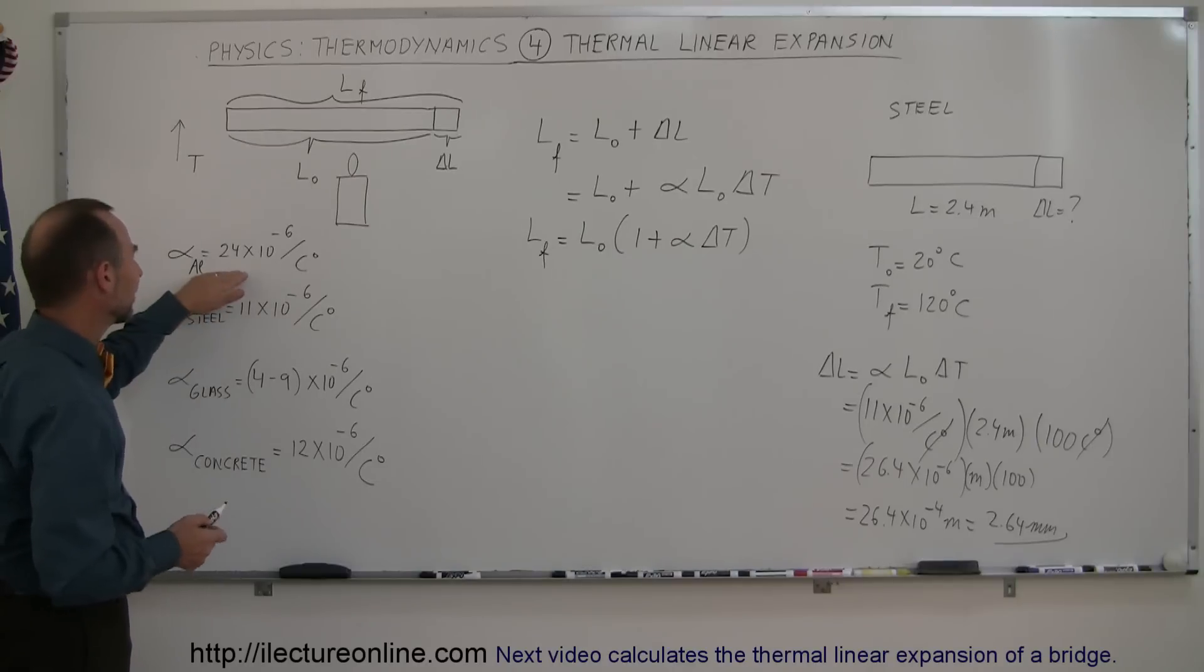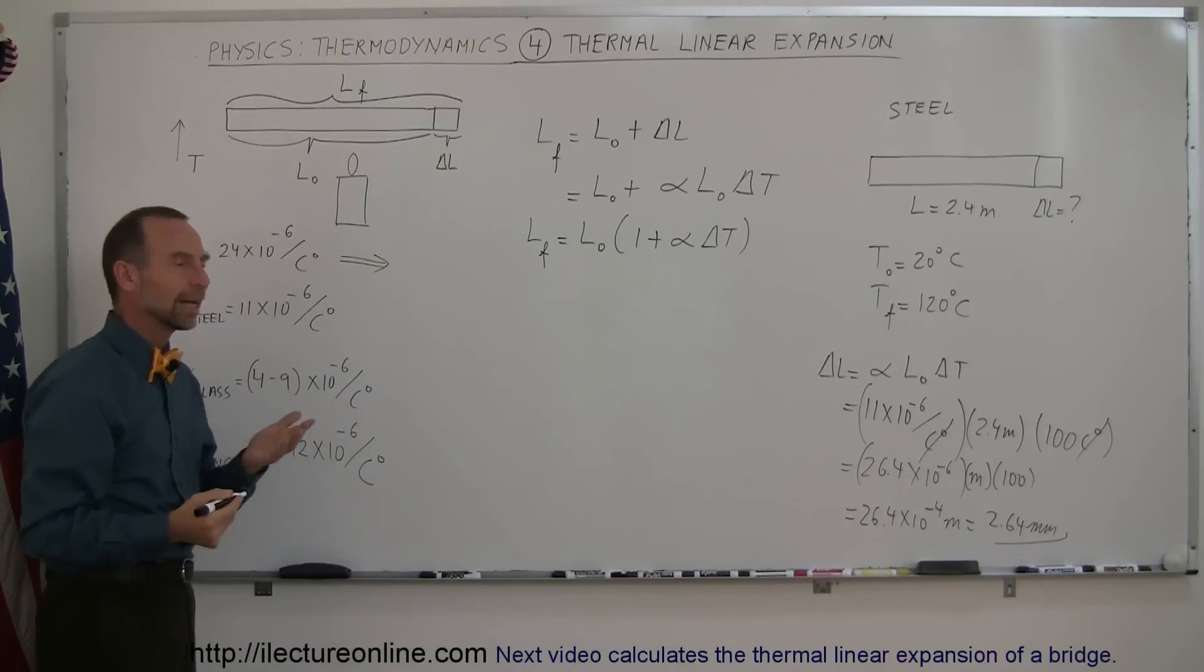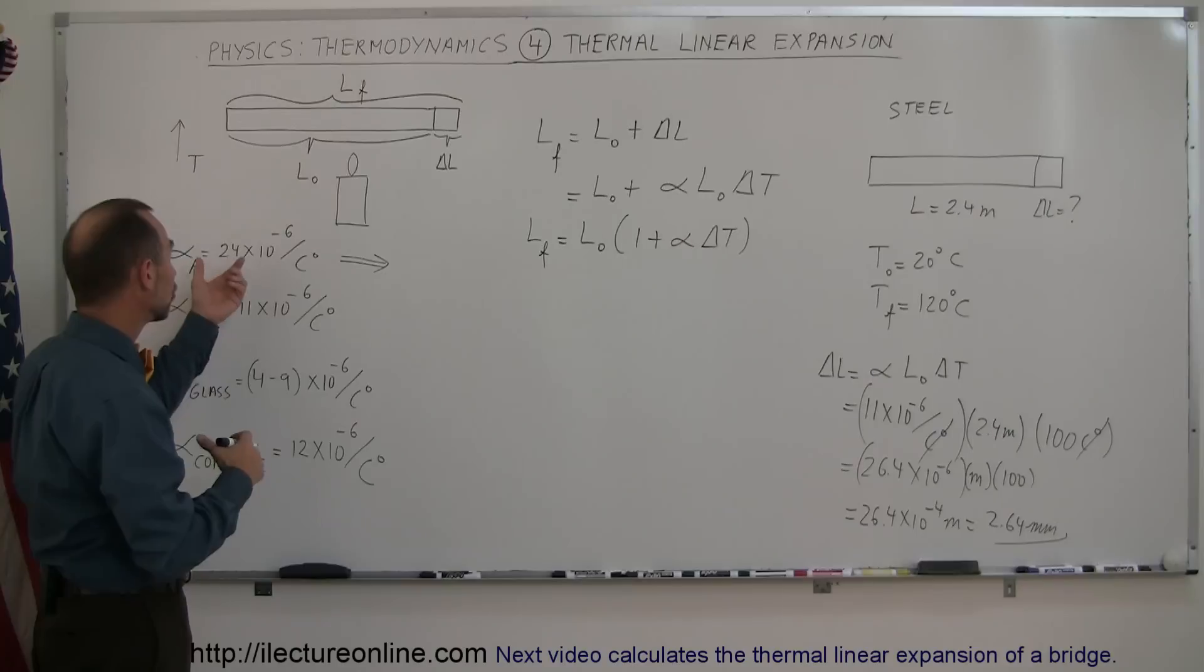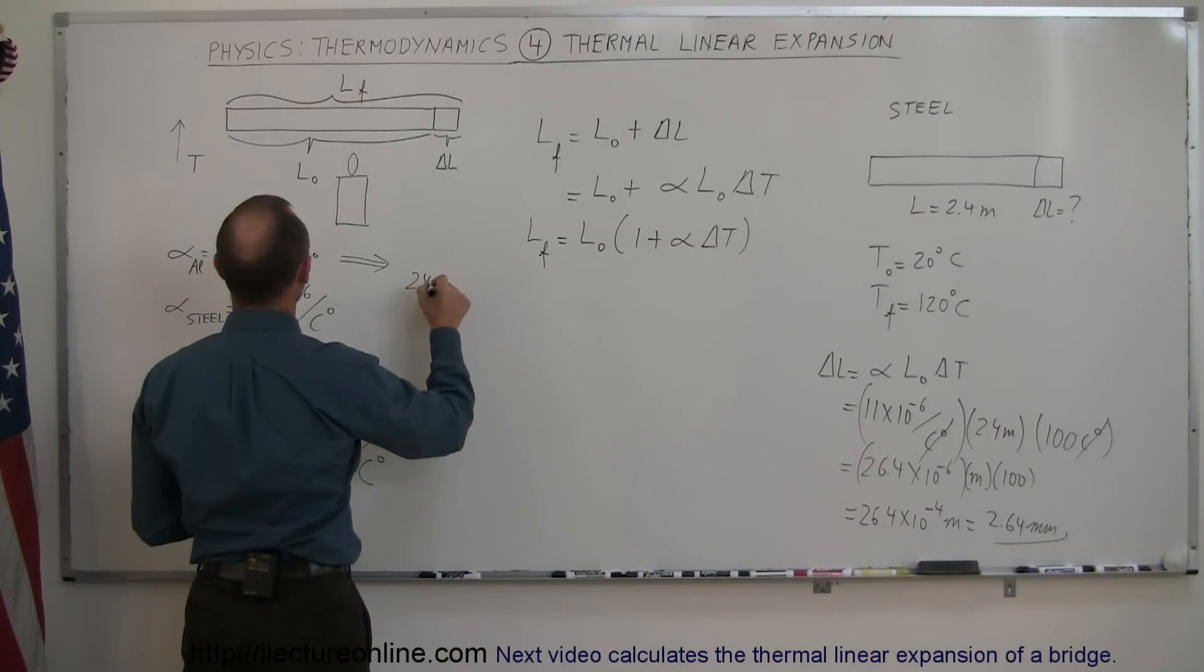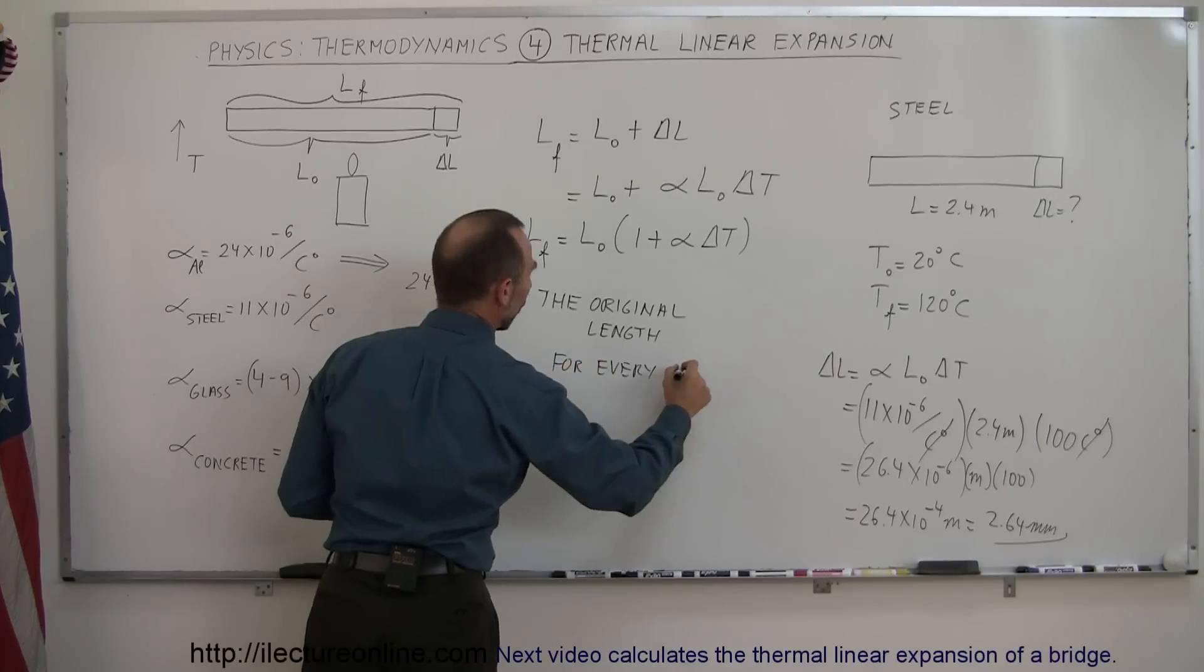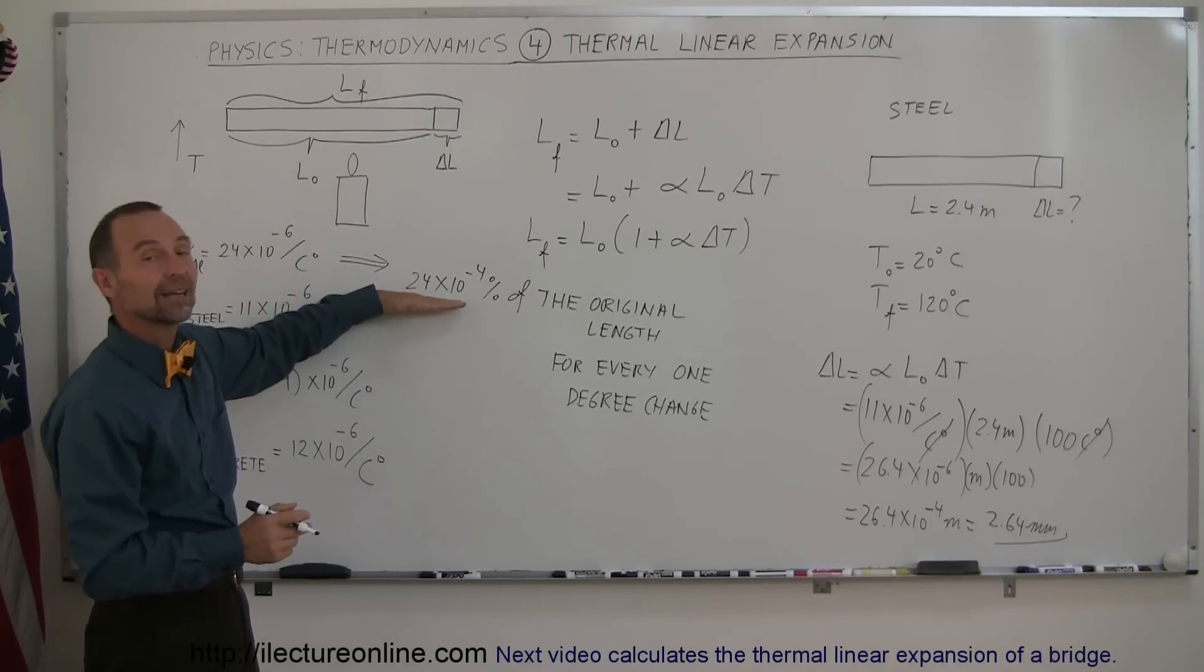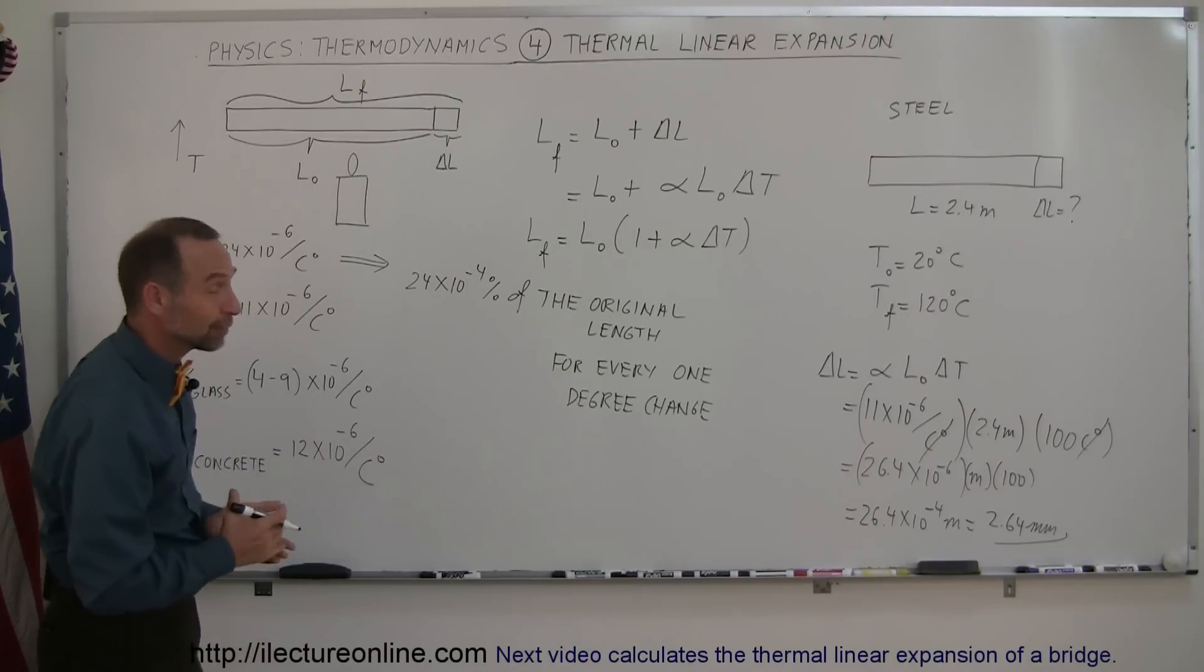Maybe I'll just add one more thing. Let's take this, for example. If we change this to a percent of its original length, what this really means is for every one Celsius degree difference in temperature, be it higher or lower, the change in length, either longer or shorter, will be equal to times 10 to the minus 4 percent of the original length for every one degree change. So whatever the original length is, if the temperature changes by one degree, it'll change that much from its original length. So another way of looking at the coefficient of linear expansion.